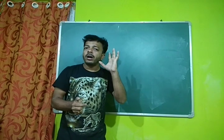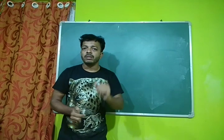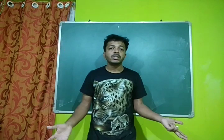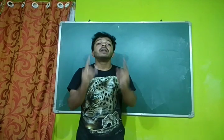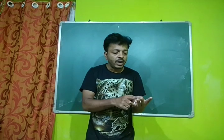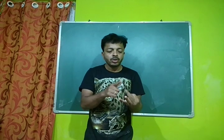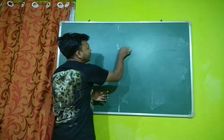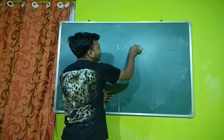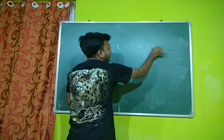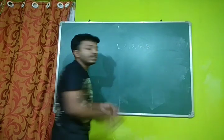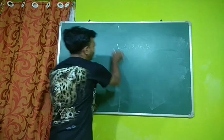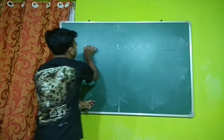So natural numbers. Natural numbers means what? The numbers start from 1, 2, 3, 4, 5. So like these numbers, this group of numbers is called natural numbers.